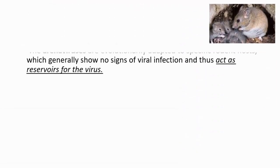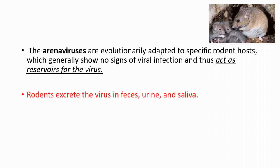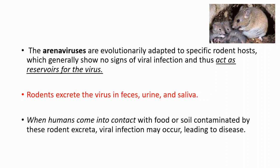In summary, RNA viruses are evolutionarily adapted to specific rodent hosts, which generally show no signs of viral infection and thus act as reservoirs for the virus. Rodents excrete the virus in their feces, urine, and saliva, and when humans come into contact with food or soil contaminated with this rodent excreta, viral infection may occur leading to disease.